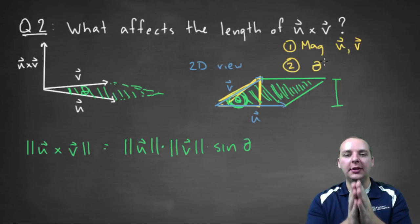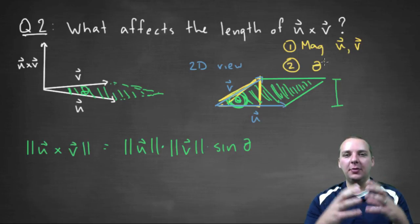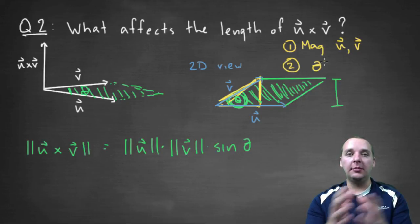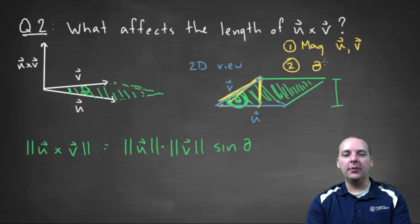When you have ninety degrees here, that sine value is going to be as big as it can be. It's going to be one. And you get the full magnitude of u times the full magnitude of v.